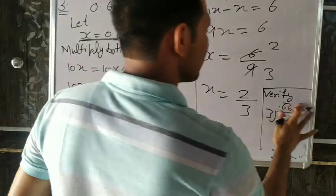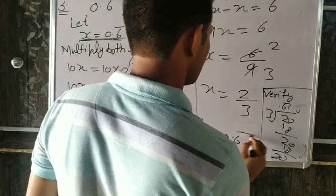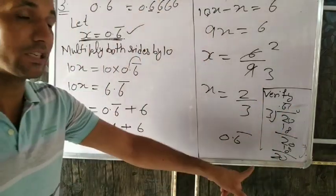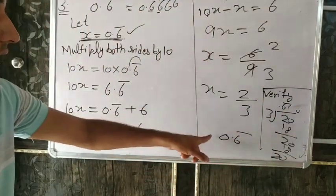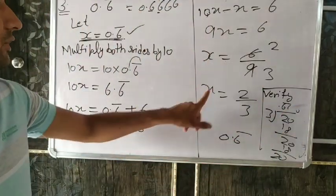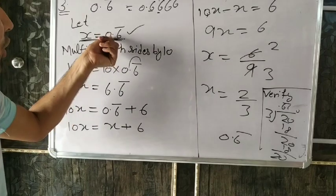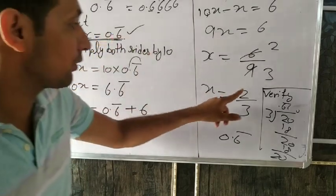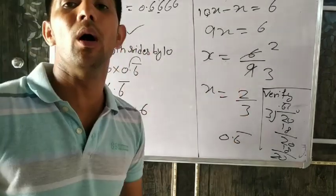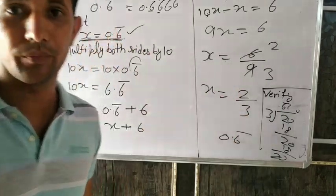What is come? 6, 0.6 bar. Do you understand how we will verify? It is our answer. 0.6 bar is equal to 2 upon 3.